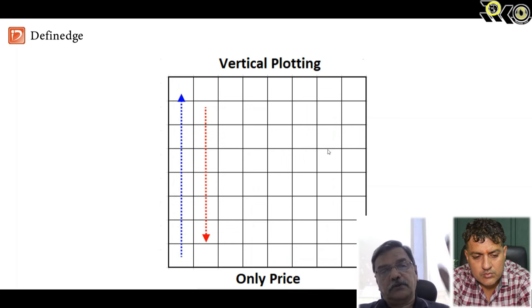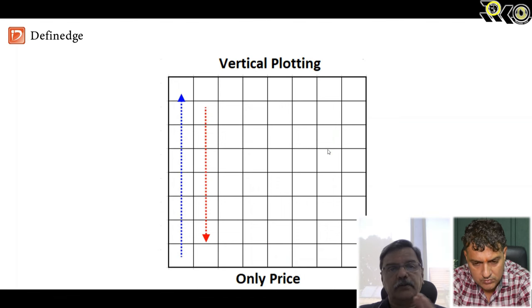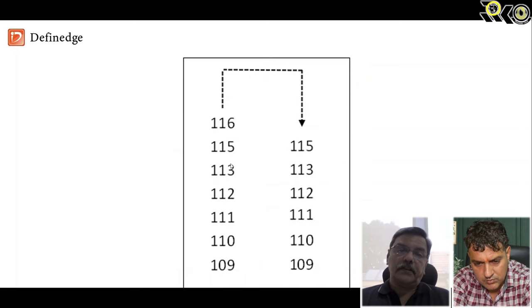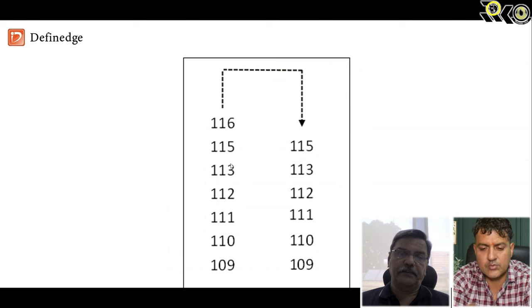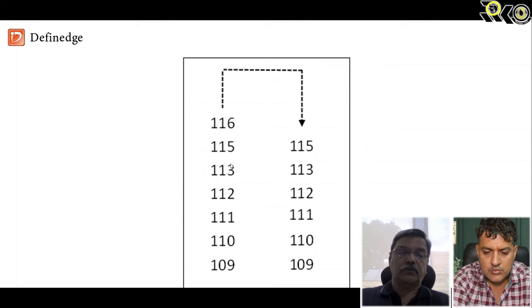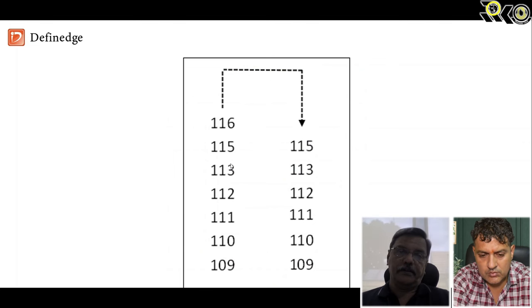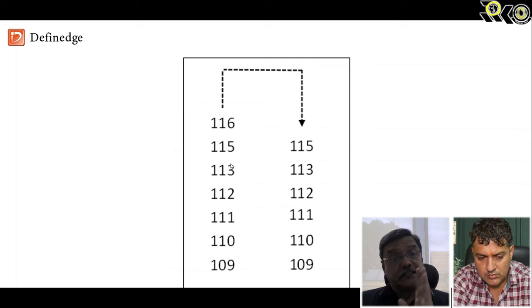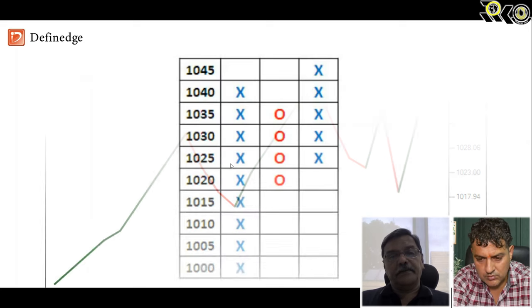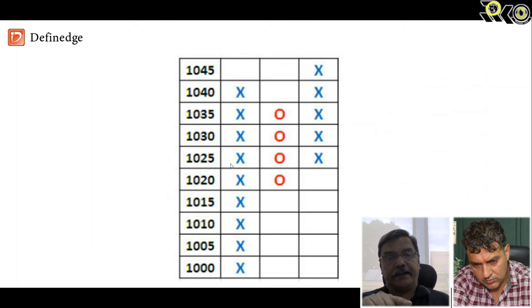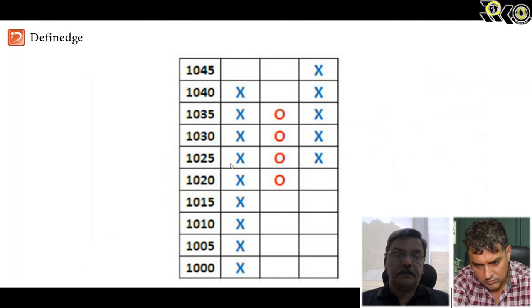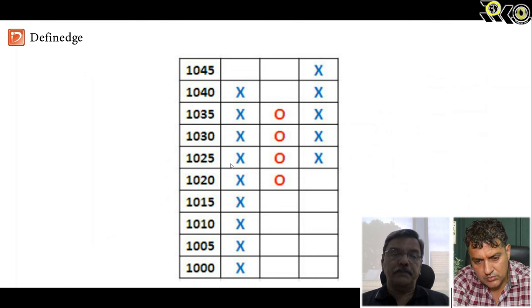The chart is always made of columns of square boxes. Earlier they used to write the prices on graph paper — 109, 110, 111 — then they moved the price to the Y-axis. Whenever the price is rising, just mark an X. X means a bullish print. For example, for every five-rupee rise there is an X marked — so the box size is five. Unless the next five rupees is locked in, the next X will not be plotted. If the price goes to 1044.9 but not to 1045, no X is plotted at 1045.